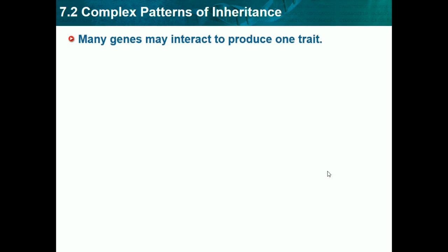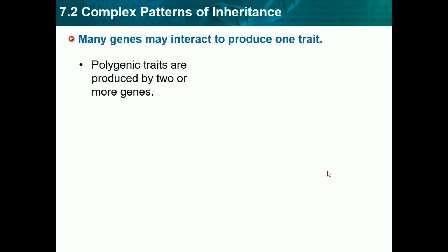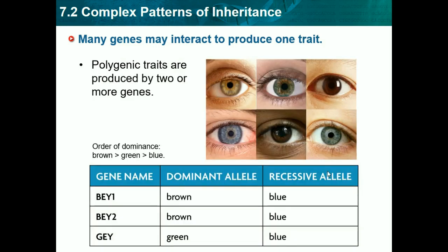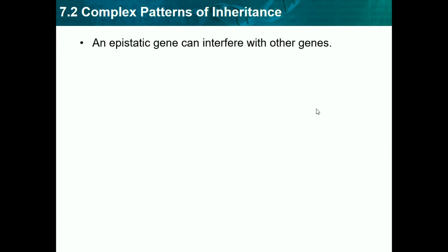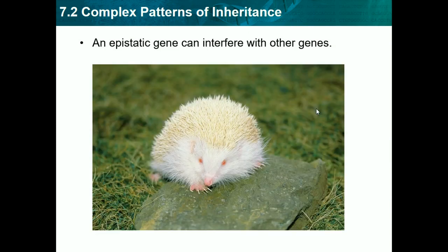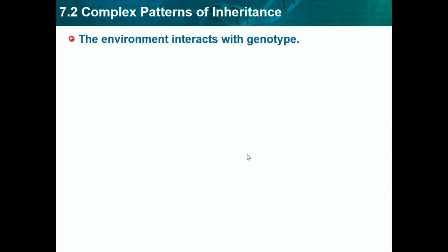Many genes may interact to produce one trait — these are called polygenic traits, produced by two or more genes. Eye color is an example: multiple genes produce one trait of eye color, incorporating multiple pieces, as we see in the different blends shown. An epistatic gene can interfere with other genes, affecting more than one thing — for example, in an albino porcupine it affects eye color, needle color, and fur color.